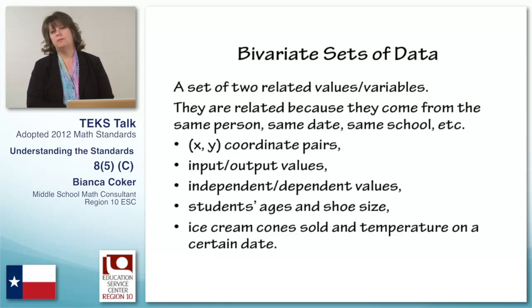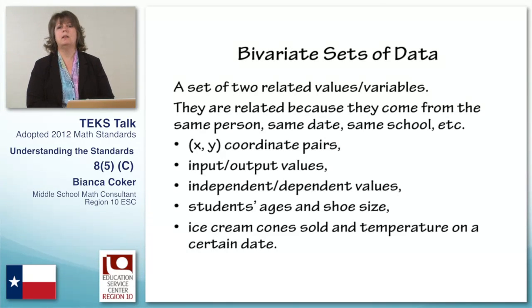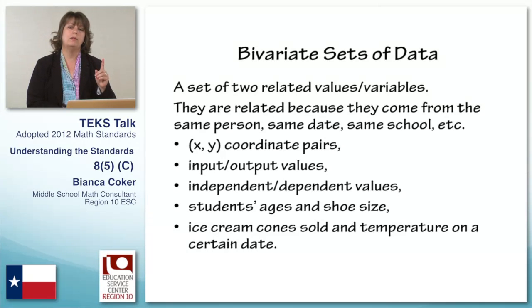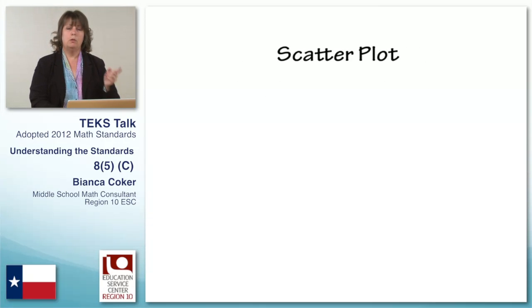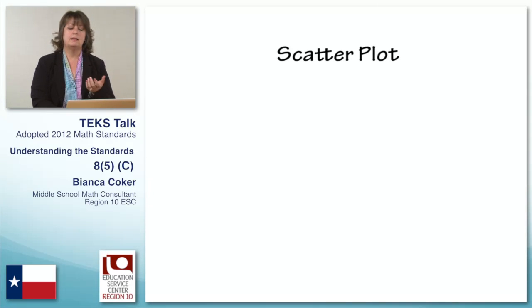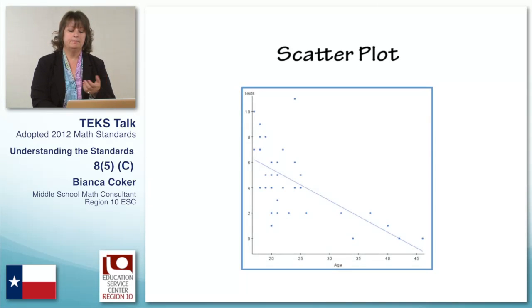It's a little different from most of our other statistics because in those situations we have only a single variable. Here we have two variables about the same person, same date, something that's similar. And so with that, we create a scatter plot.